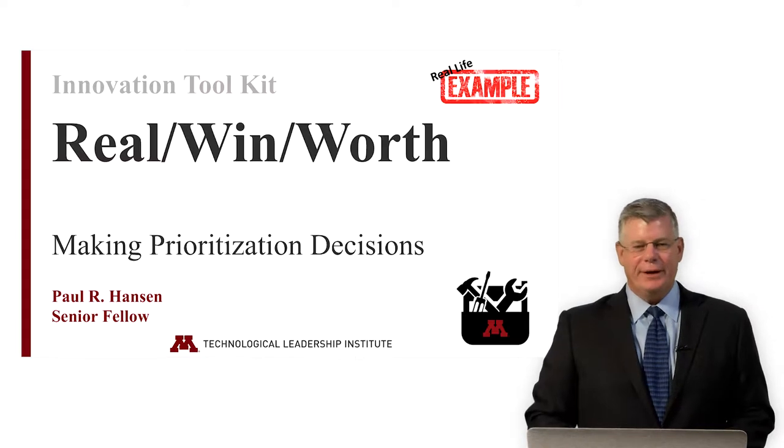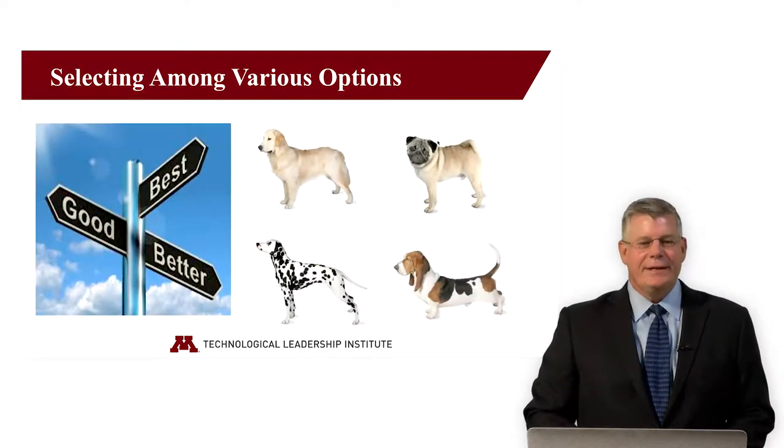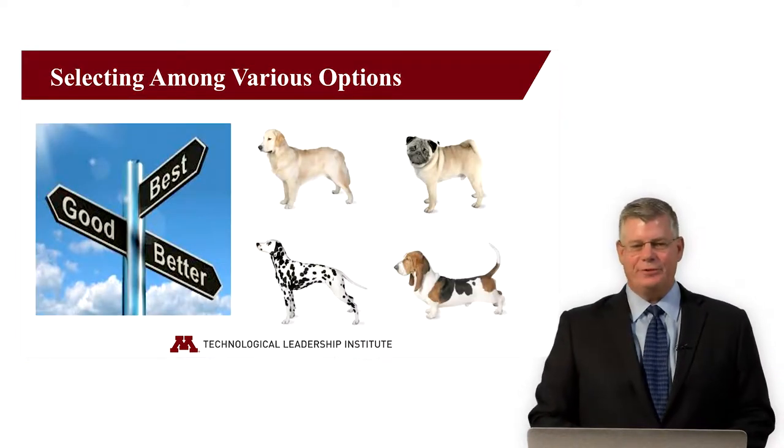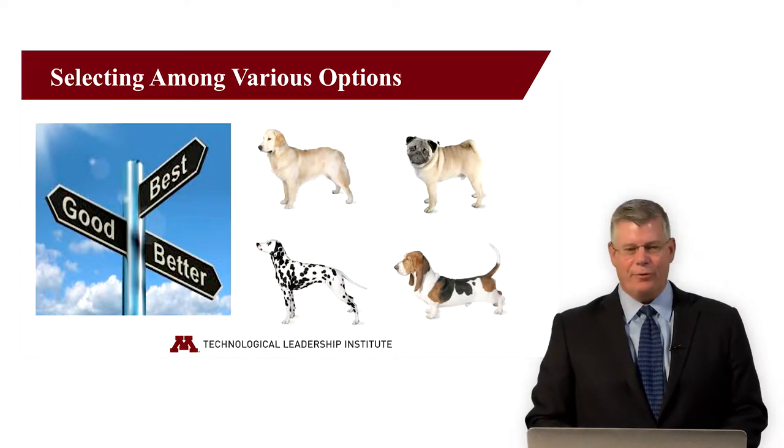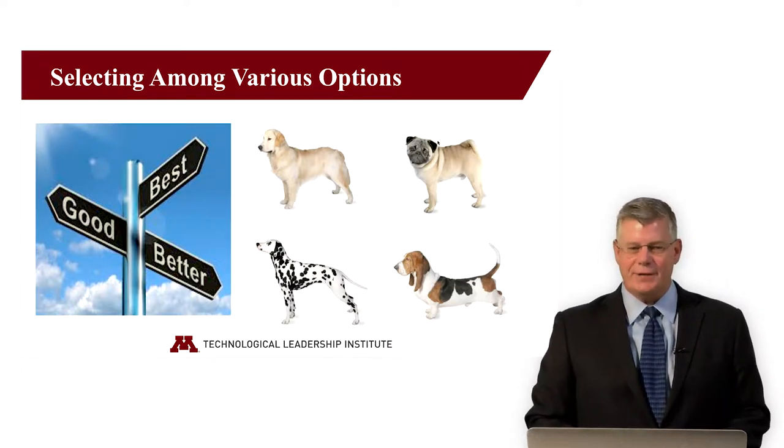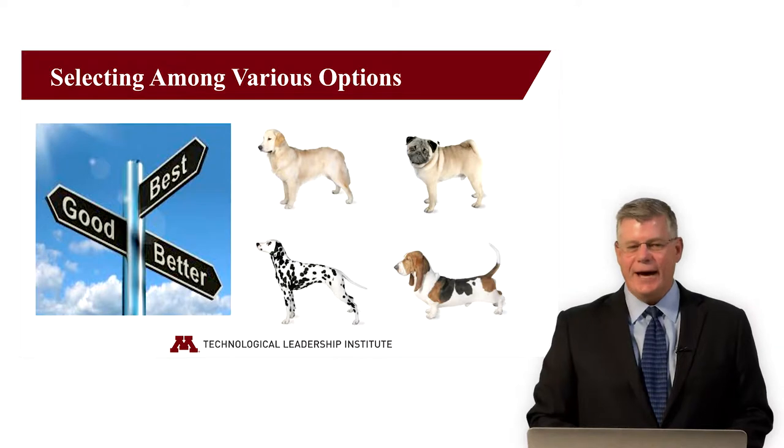I'm going to walk through an example using the RealWinWorth tool originally developed by George Day to demonstrate how the tool can help with prioritization. Typically, the tool is used to prioritize projects or rate individual programs as they move through the stage gate process. However, as I mentioned in the last video, this tool is extremely versatile.